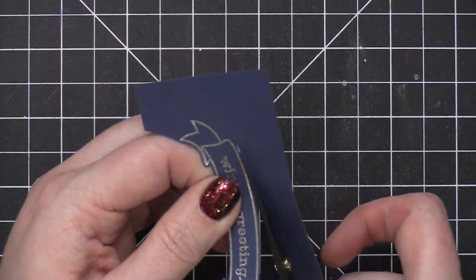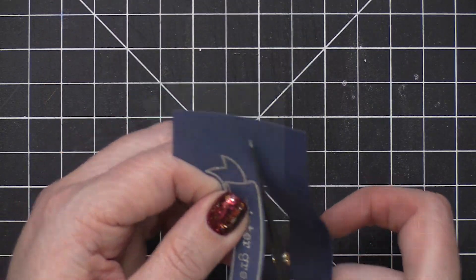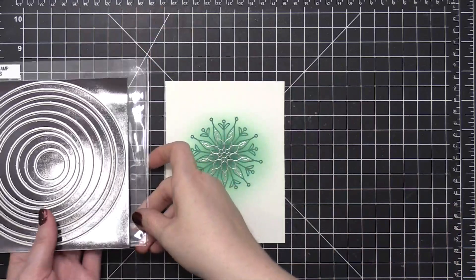Now I don't have a die for this one, so I'm using my scissors to fussy cut around this banner. It's a fairly simple shape so it didn't take long.